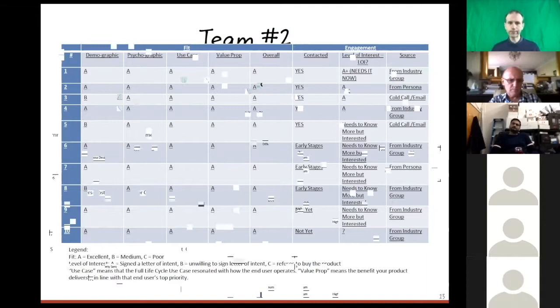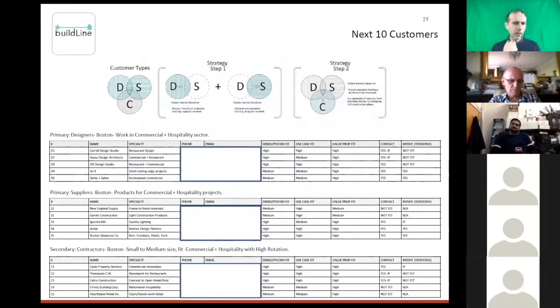There's been other instances of this. This is a product from an MIT project called BuildLine. This particular one, they had actually a multi-sided platform, which actually had got three different customers. So it's a bit more complicated. They had a platform that connected designers, suppliers, and contractors. You can see DSC here on the top of the slide. They basically tried to figure out for those customers, what was the fish and what was the intent.